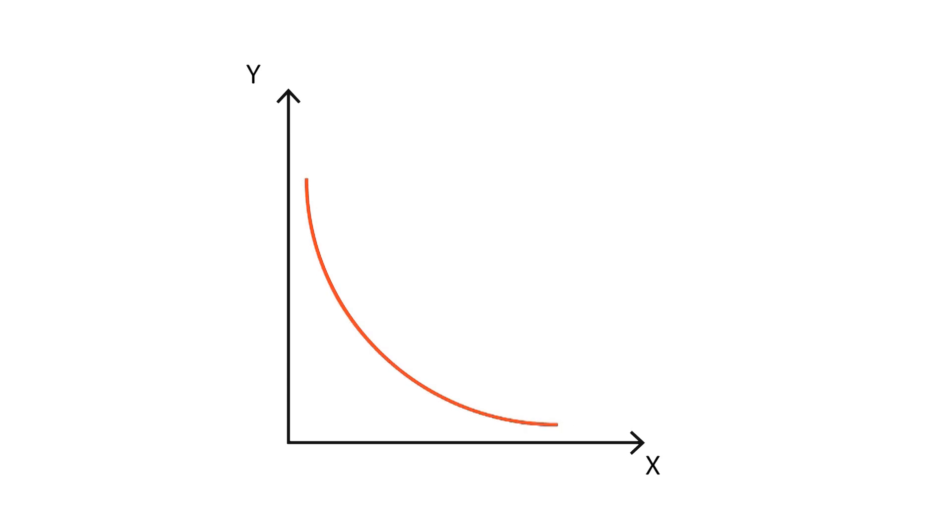The indifference curves, as we move away from the origin of coordinates, imply higher consumption, and therefore, increasing levels of utility. When able to choose, the consumer will always try to obtain the indifference curve that gives him the highest utility.